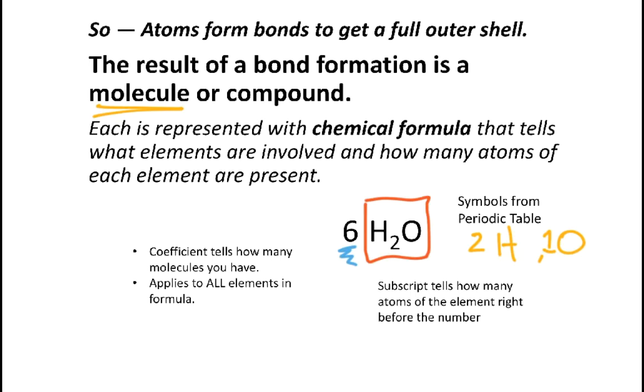One way of thinking about it is the coefficient is like in math - if you have a number in front of parentheses, you would multiply everything inside the parentheses by that number. That coefficient applies to all of the elements present in the formula. So if I have 6H2O, that means I have a total of 12 hydrogen atoms and 6 oxygen atoms.